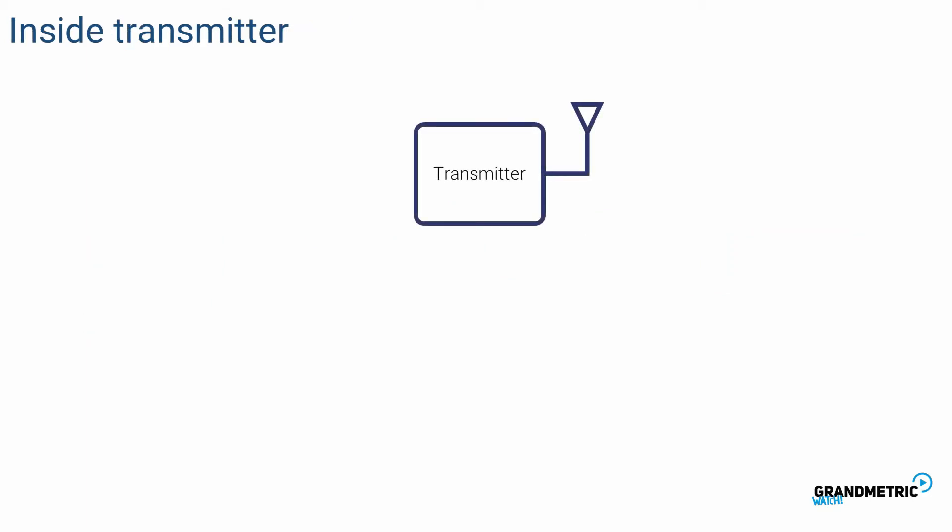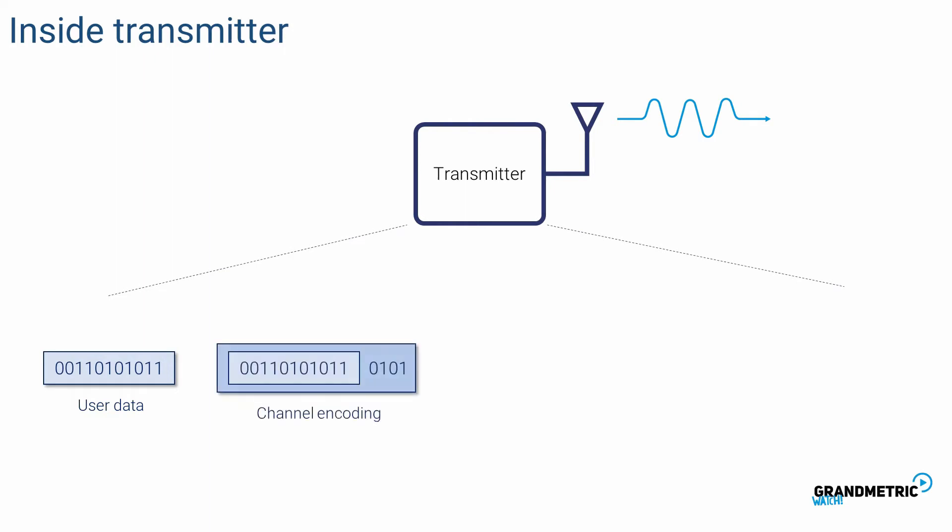The transmitter is more than just an oscillator. We don't want to send constant sine wave but rather have some digital data to transmit. This data is encoded which means additional bits are appended. This makes data recovery easier in the receiver.